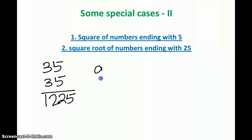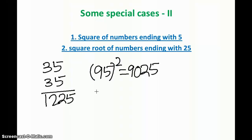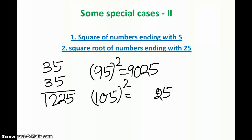Expanding this to any number: for 95, write 25, and the next number after 9 is 10, so 9 into 10 is 90 — giving 9025 as the square of 95. Similarly, for 105 squared: write 25, then 10 into 11 is 110, giving 11025. That is how it goes — quite simple.